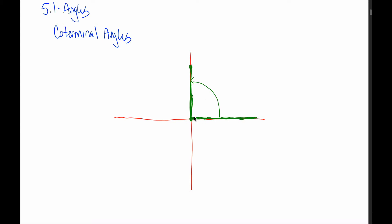Another way we could think about the angle is just sort of where we end up. If we're always going to start informally speaking over here on the positive x-axis and always measure counterclockwise, we can think about a 90-degree or pi over 2 radian angle as the one that ends up here on the positive y-axis. Similarly, a 180-degree angle or a pi radian angle would end over here on the negative x-axis. A 355-degree angle would end just short of our x-axis down here somewhere.